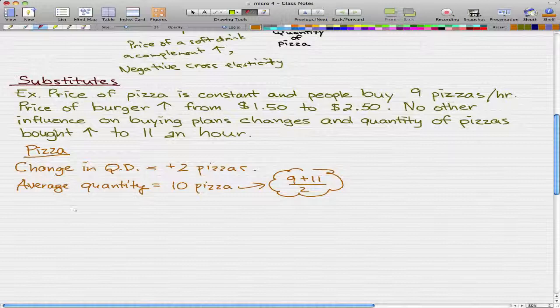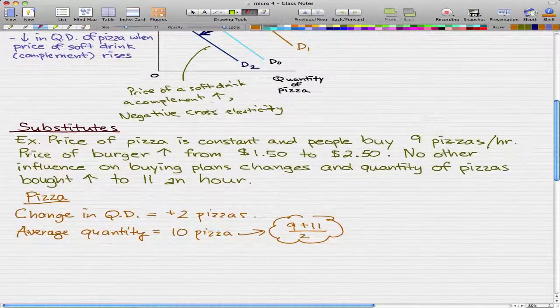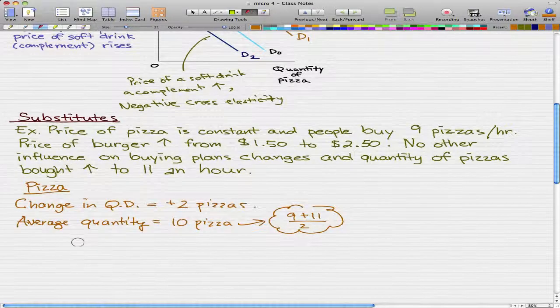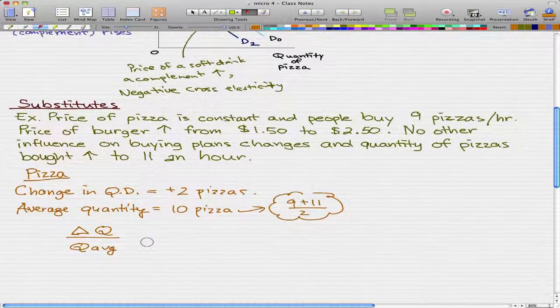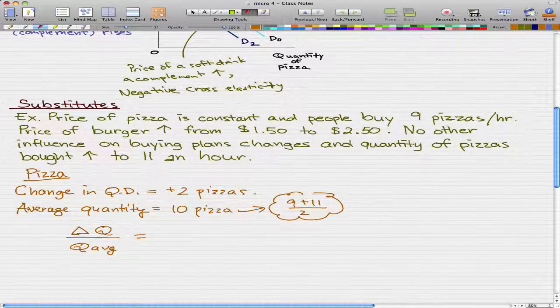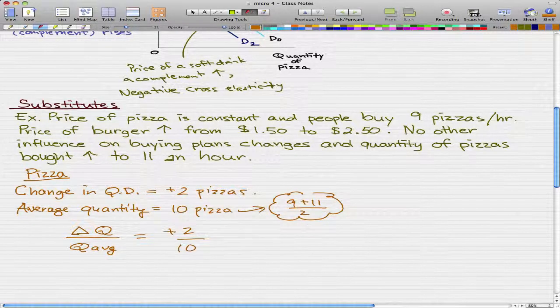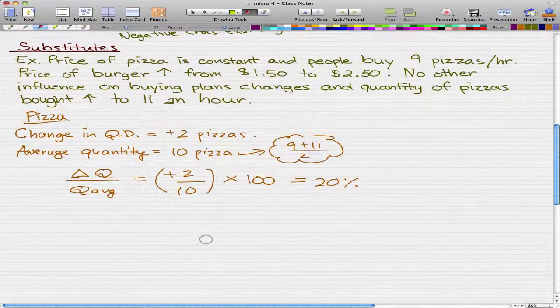We're going to do the percentage change in quantity demanded. The formula for percentage change in quantity demanded is ΔQ over Q average. Delta is a mathematical symbol for change and that is 2, so the change in quantity was 2 pizzas and the average quantity was 10 pizzas. We take 2 divided by 10 and then times it by 100 which is 0.2 times 100 to get 20%.